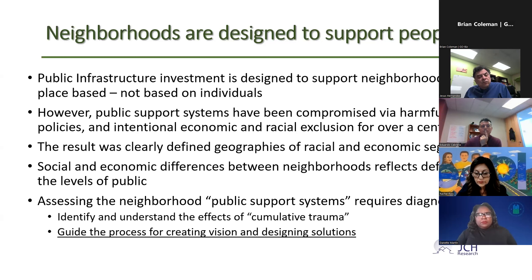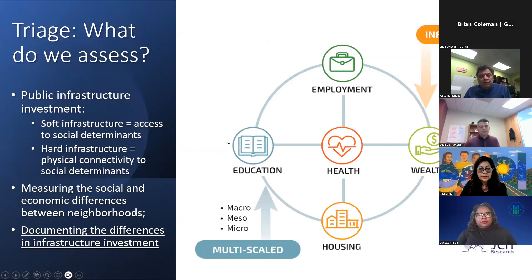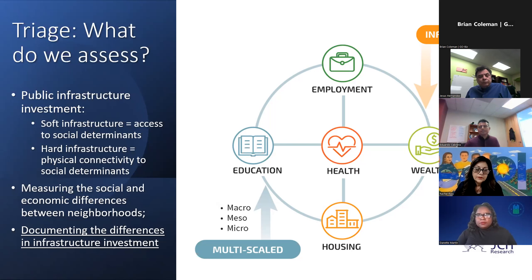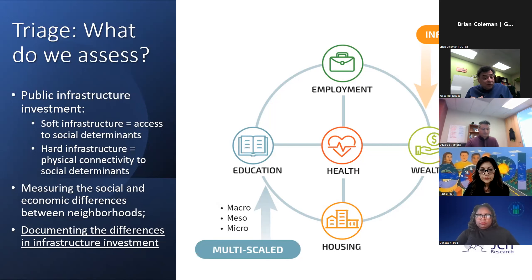The first task is to triage the neighborhood by examining social determinants — employment, education, housing, healthcare — which are all interrelated. They assess the soft infrastructure (policies, funding) and hard infrastructure (physical connectivity, broadband, streets, transit) and measure differences between neighborhoods. When these investment differences are documented clearly, the types of actions needed become apparent.